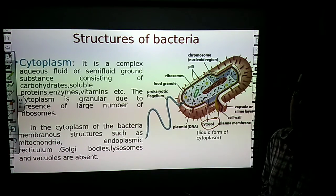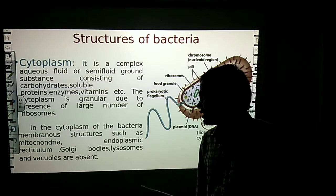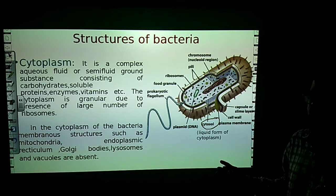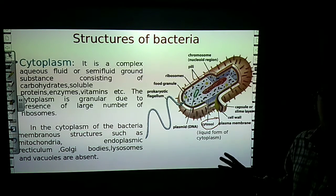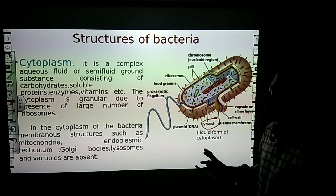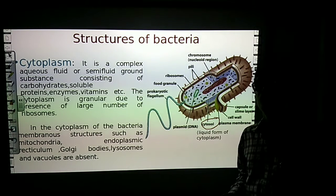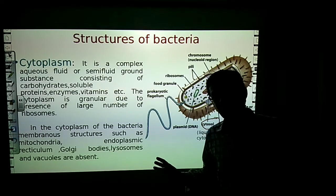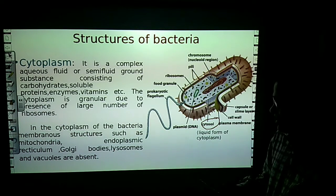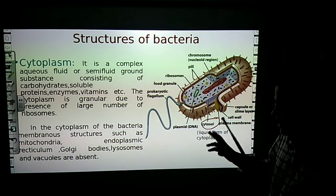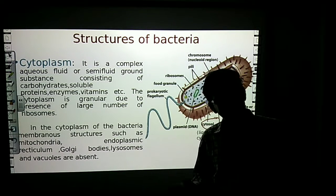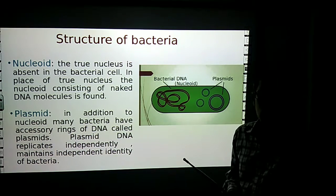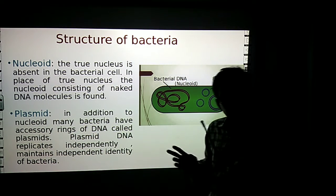When ribosomes are associated in groups, they are called polyribosomes. In the cytoplasm of bacterial cells, membranous structures such as mitochondria are not found. No membrane-bound structures are found in bacterial cells because bacteria are prokaryotic organisms — they have no well-defined nucleus, endoplasmic reticulum, Golgi apparatus, lysosomes, or vacuoles.